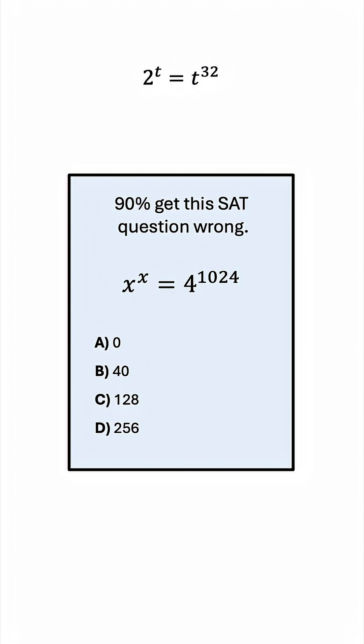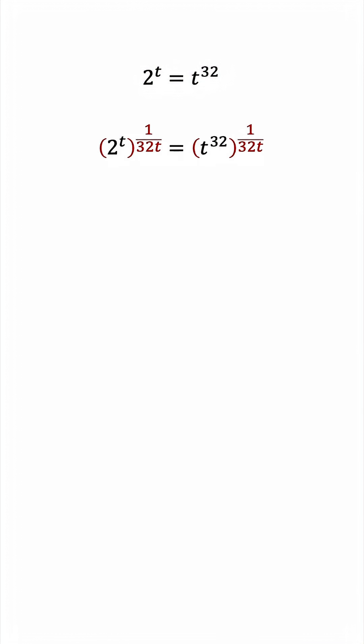But first, let's do this manipulation. Let's raise both sides to the power of 1 over 32t. This will cancel the t from the left and the 32 from the right.